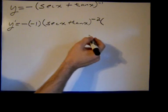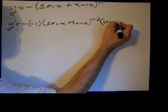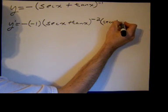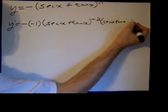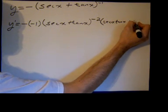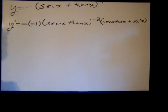Now we'll take the derivative of the inside. The derivative of secant x is secant x times tangent x. And the derivative of tangent x is, of course, secant squared x.